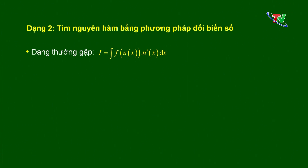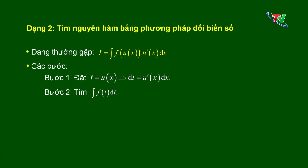Dạng thường gặp của phương pháp đổi biến số là ∫f(u(x))·u'(x)dx. Các em phải chú ý đến 2 đại lượng: u(x) và u'(x). Nếu biểu thức dưới dấu nguyên hàm có 2 đại lượng này, ta thực hiện các bước: bước 1 đặt t = u(x), suy ra dt = u'(x)dx; bước 2 tìm nguyên hàm theo biến t; bước 3 thay trở lại biến x. Lưu ý: cách đặt t phải làm cho nguyên hàm theo biến t đơn giản hơn so với nguyên hàm biến x ban đầu.